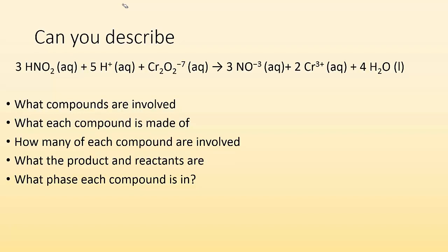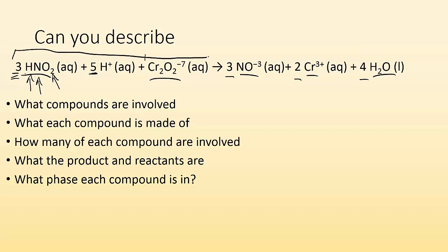Let me just go through this. What compounds are involved? We've got the HNO2 compound — these are the compounds involved, and some of them are ions. What is each made up of? HNO2 is made up of one hydrogen, one nitrogen, and two oxygens, and hopefully you can do that for the rest of them. How many of each compound are involved? There are three HNO2s, five H pluses, only one Cr2O7, three NO3 minuses. What are the products and the reactants? The reactants are on the left side and the products are on the right side. And what phase is each compound in? You look here for that.